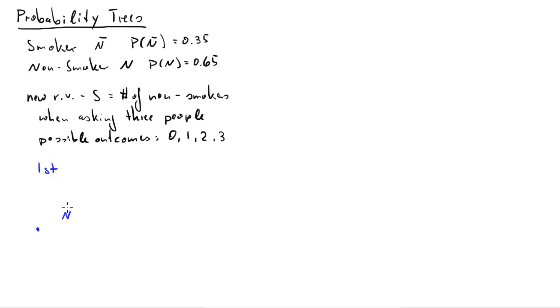The first respondent is either going to be a smoker n bar or is going to be a non-smoker, and that is just an n bar and that is just an n. So here we go, that is just an n. I will paint all n's in red and all n bars in blue.